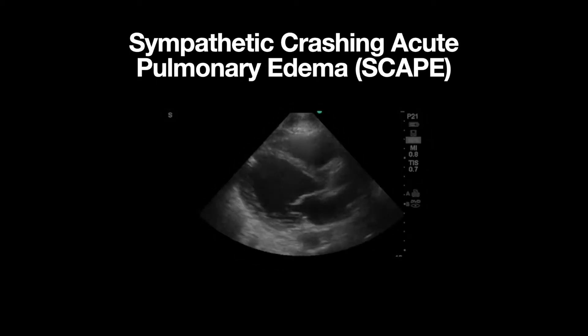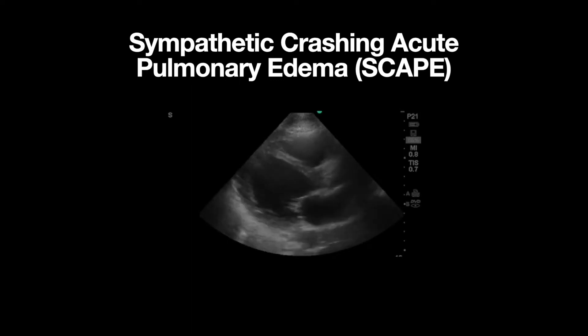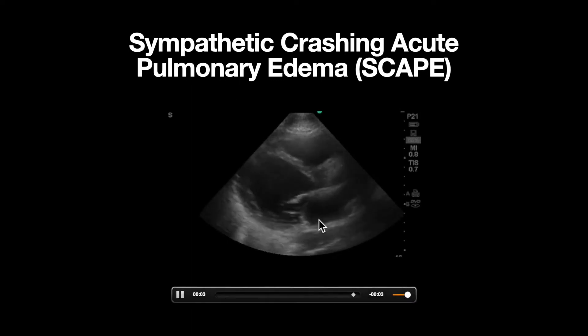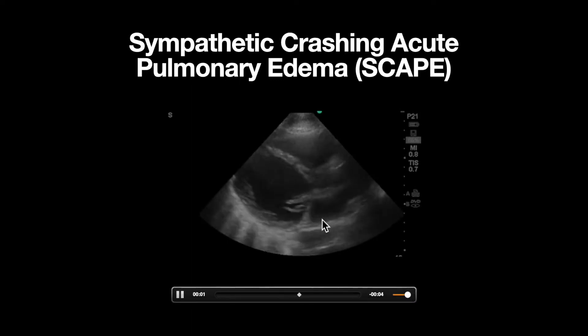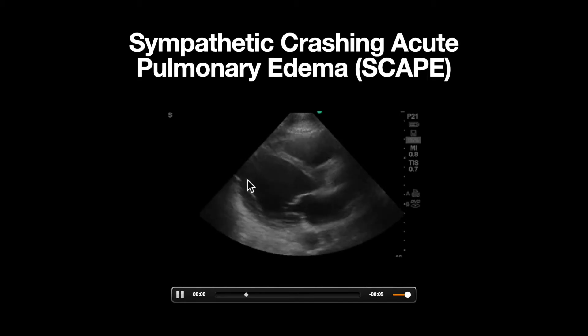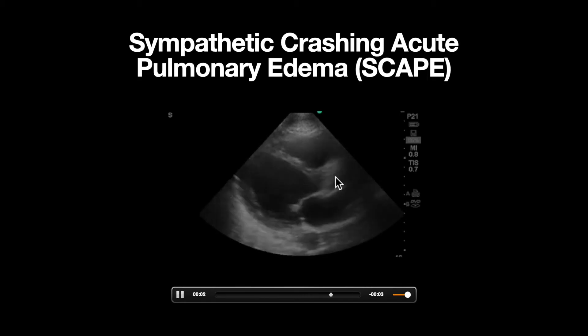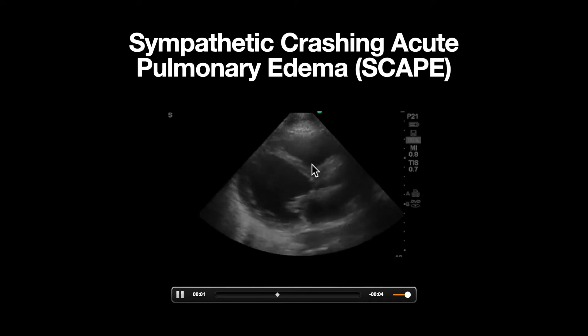In our parasternal long axis view, a decreased ejection fraction is appreciated. The left atrium can be seen here, mitral valve, left ventricle, aortic outflow tract, and right ventricle outflow tract.